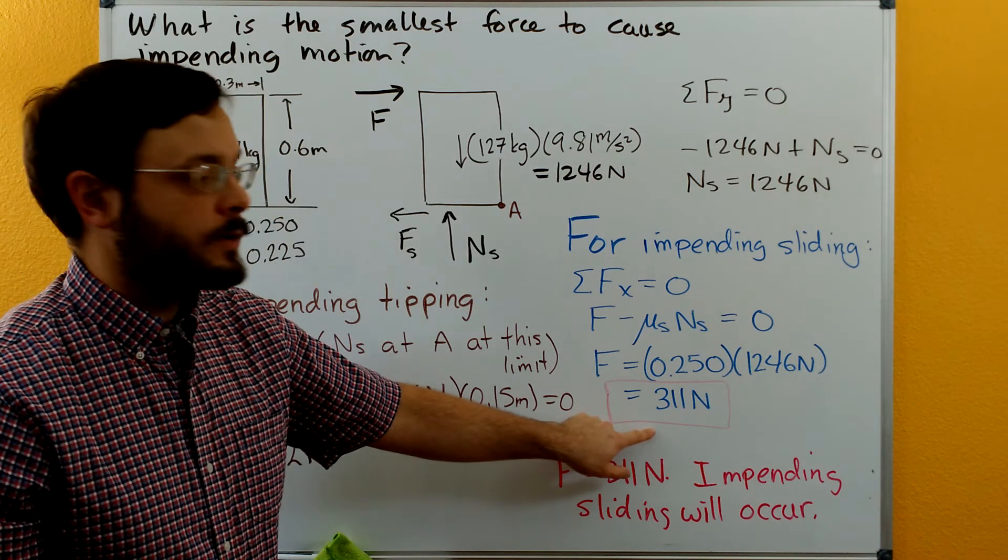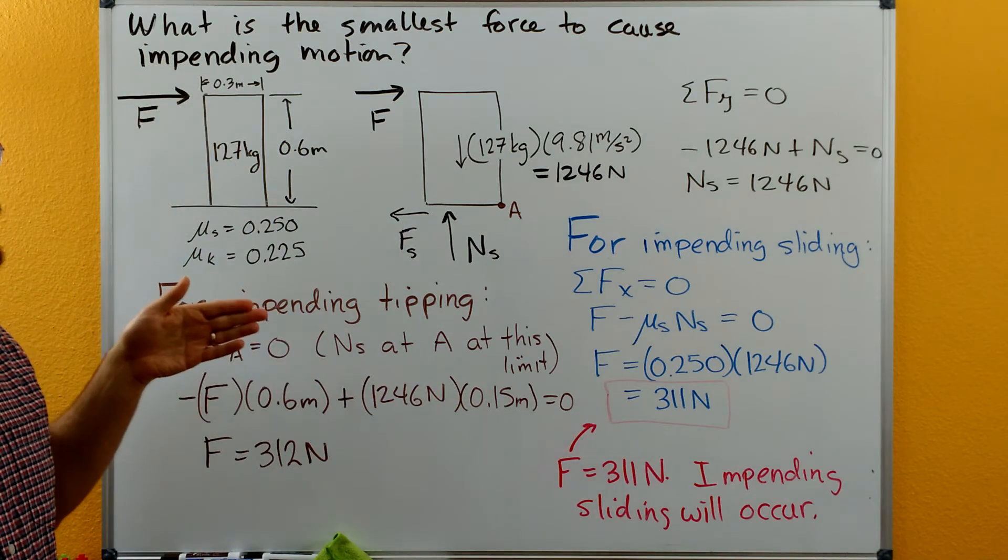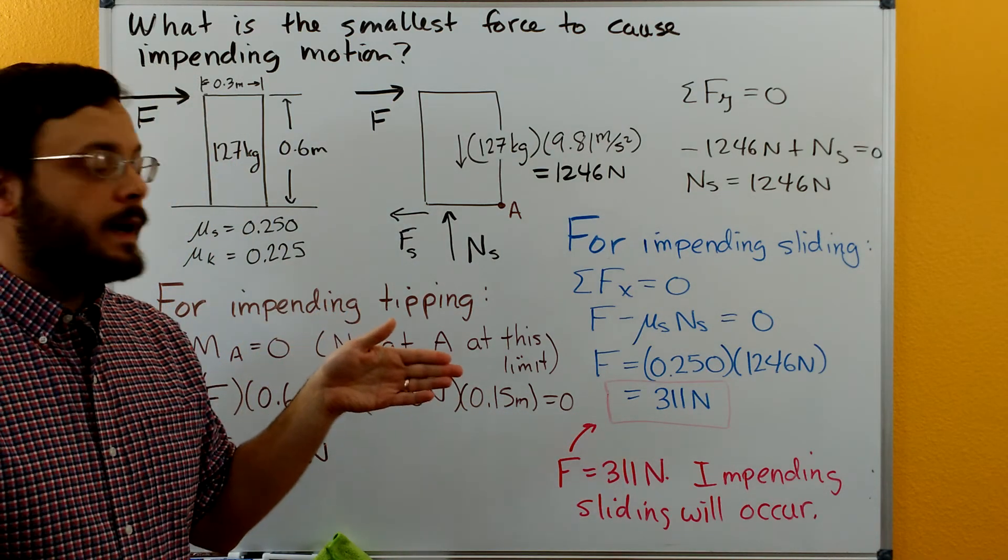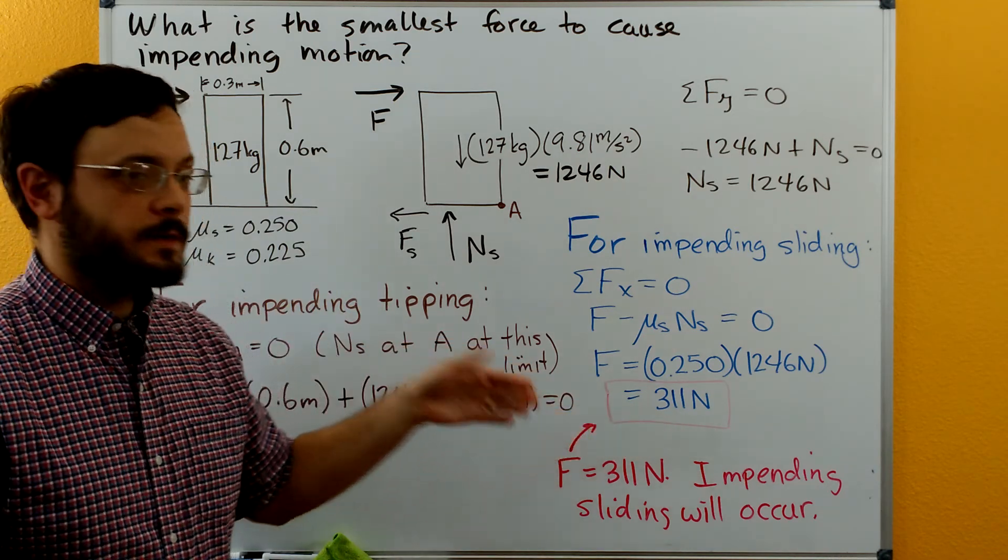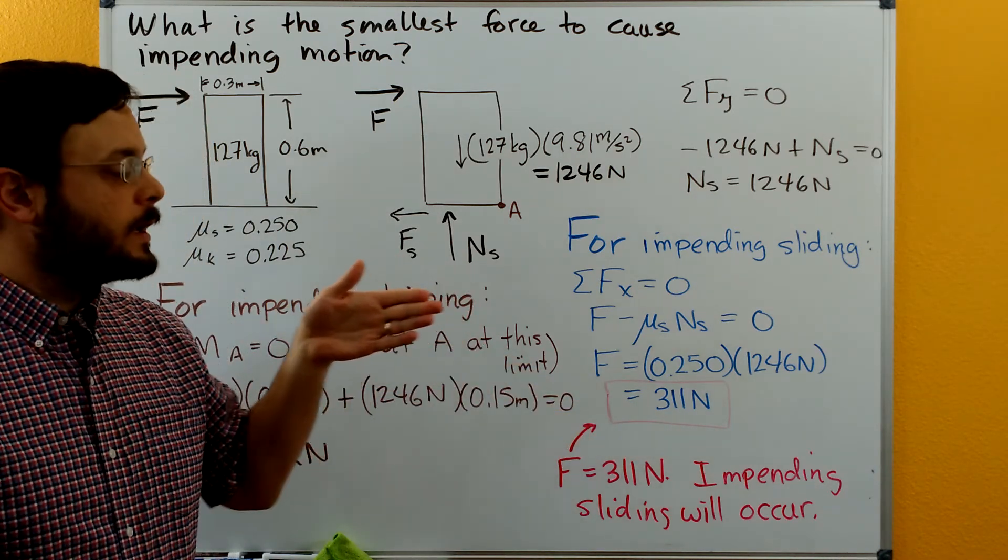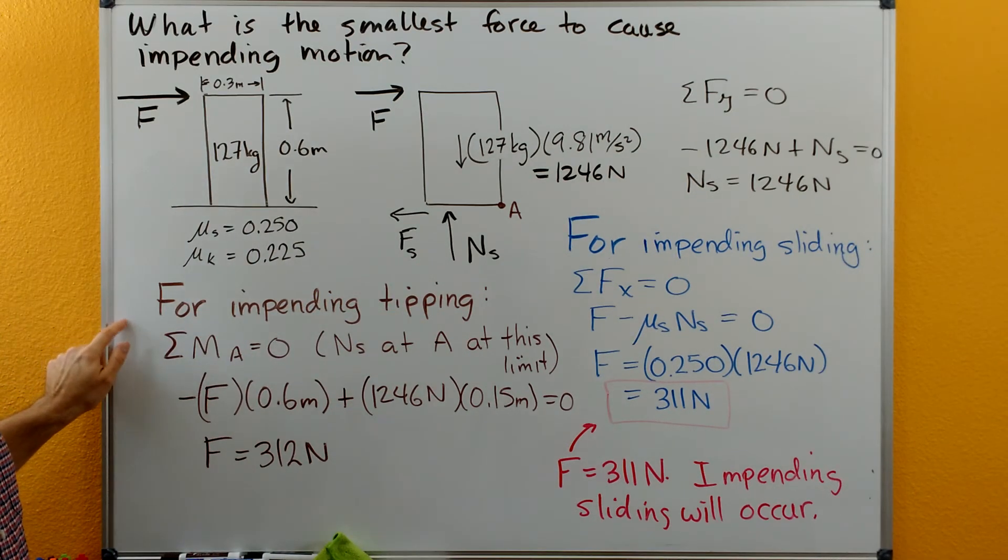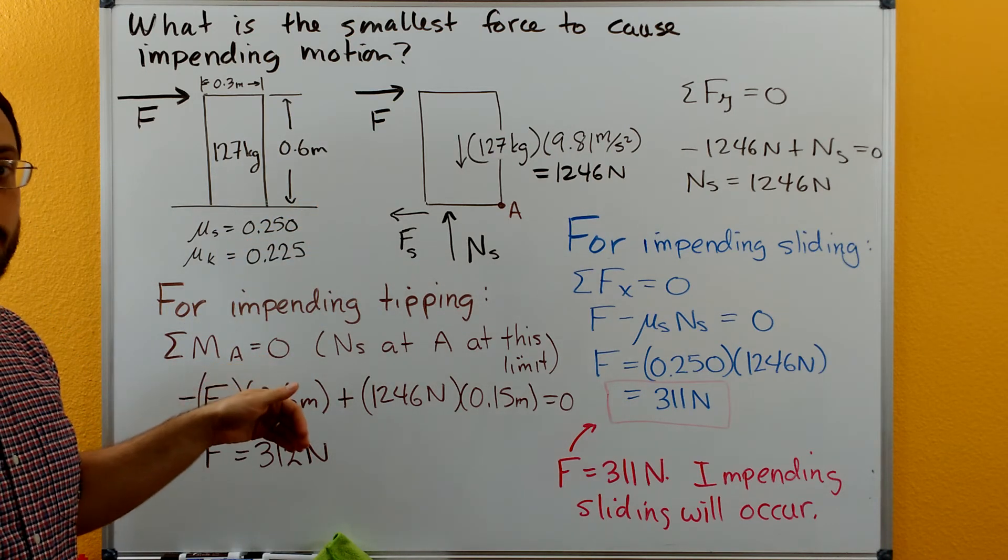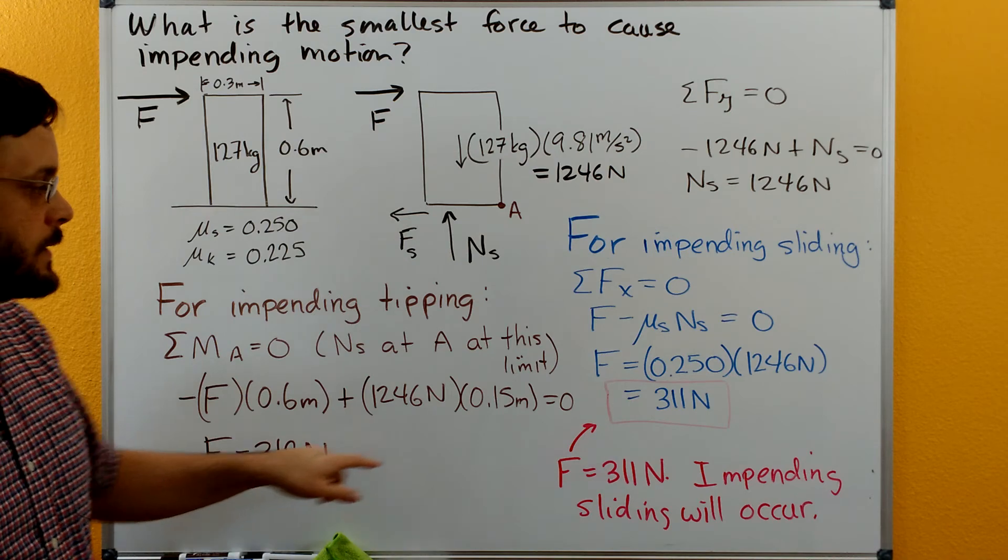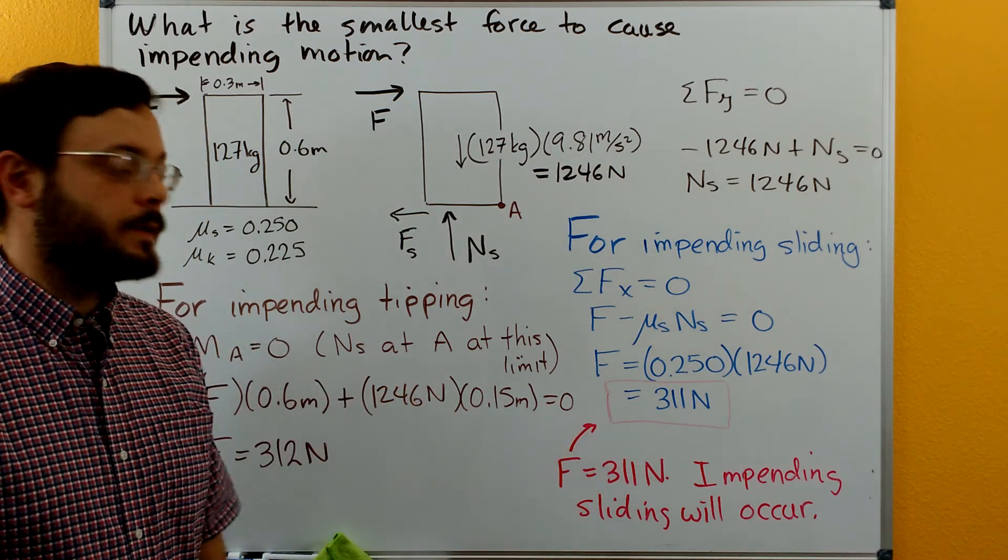The force over here is slightly lower, and so this indicates that we're going to get up to impending sliding, and then if we put 311 newtons, if we put a hair over that, it would go into sliding in the kinetic regime. It's never going to hit impending tipping. So when you investigate these multiple cases, make sure that you find the one that has the lowest force and then report that as the case that'll happen.